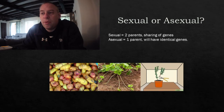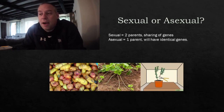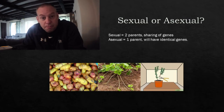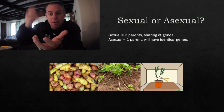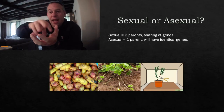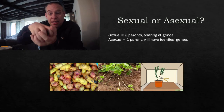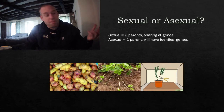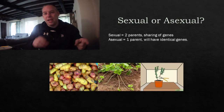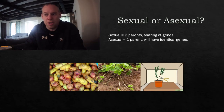Asexual reproduction is where you only need one parent — it's basically cloning. Plants are able to do that using lots of different methods. For example, potato tubers grow at the bottom of the roots. A potato plant puts all its energy as a store in the potatoes, and if you take that potato away and plant it, it will grow into a new plant that is genetically identical to the parent — a cloned version.